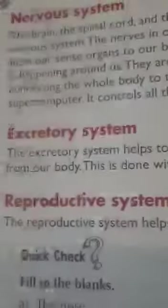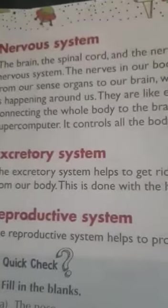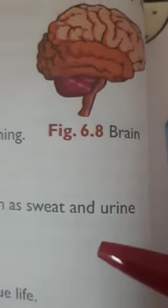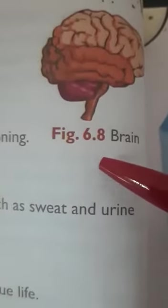Next is the nervous system. The main part of the nervous system is our brain. The brain, spinal cord, and nerves make up the nervous system. The nerves in our body carry messages from our sense organs to our brain, which tells us what is happening around us. Whatever we touch, feel, taste, hear, or see — these messages go to the brain through the nerves.